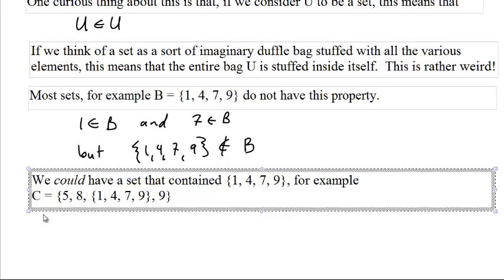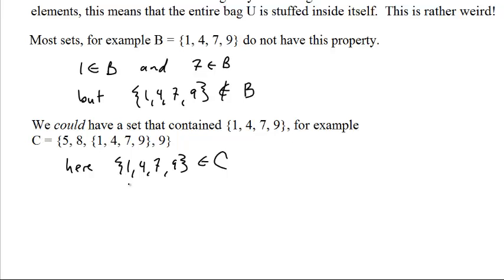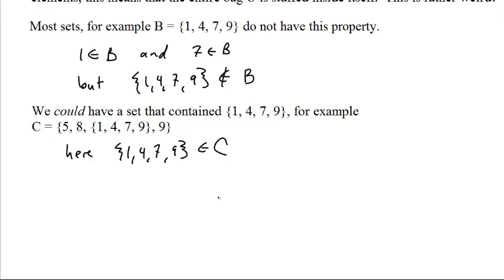We could have a set that had it like C. C consists of four different things. The first thing is 5, the second thing is 8, the third thing is the set containing 1, 4, 7, and 9, and the fourth thing is 9. It has four things, and the set containing 1, 4, 7, and 9 is one of those four things. The way we've listed it, it's the third one. But even in this case, C is not in C. This whole thing is not one of the four things.